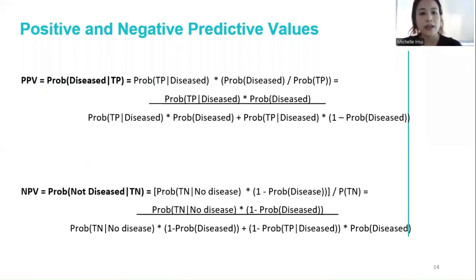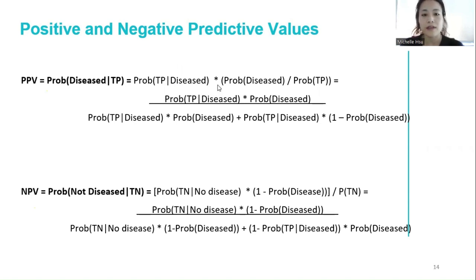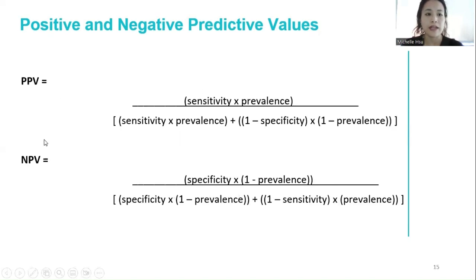Extending the rationale for calculating PPV and NPV, Bayes' theorem is used to calculate the probability of disease given the test results. Probabilities of test results conditional on disease status are modeled in the Bayesian framework, and subsequently, probabilities are transformed to probabilities of disease status conditional on test results. Some derivations are provided here, and if you're interested to learn more, feel free to refer to the reference slide at the end of the presentation.